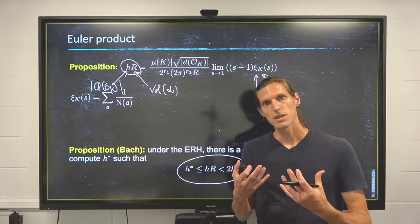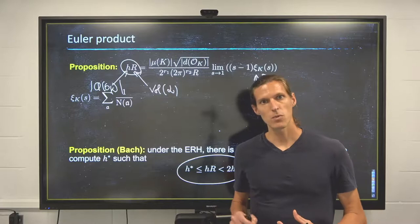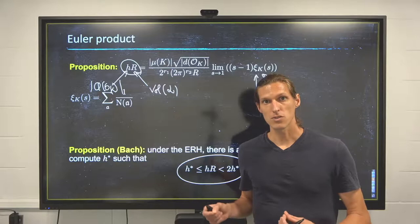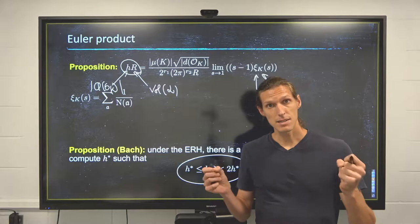...but it tells us whether or not when we have a tentative class group and a tentative unit group, this gives us a test to decide whether or not we have achieved the calculation of the unit group and the class group. So usually those have to go hand in hand, because the test is a test that tests the cardinality of both groups, basically.